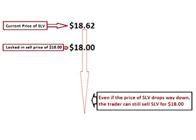This means that at any time between when the option is purchased and when the option contract expires, the trader has the option of selling his 100 shares of SLV for $18, no matter what the price of SLV is at that time. Even if the price of SLV drops to $6 per share, the trader can still sell it for $18 per share anytime up until the option contract expires.